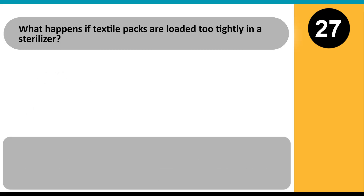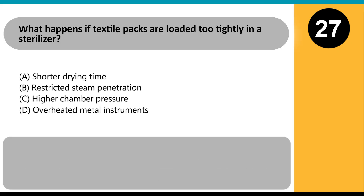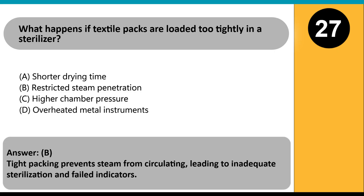What happens if textile packs are loaded too tightly in a sterilizer? A. Shorter drying time. B. Restricted steam penetration. C. Higher chamber pressure. D. Overheated metal instruments. Answer: B. Tight packing prevents steam from circulating, leading to inadequate sterilization and failed indicators.